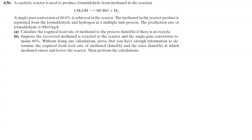The methanol in the reactor product is separated from formaldehyde and hydrogen in a multiple unit process. The production rate of formaldehyde is 900 kg per hour. The first question is to calculate the required feed rate of methanol to the process in kmol per hour if there is no recycle.